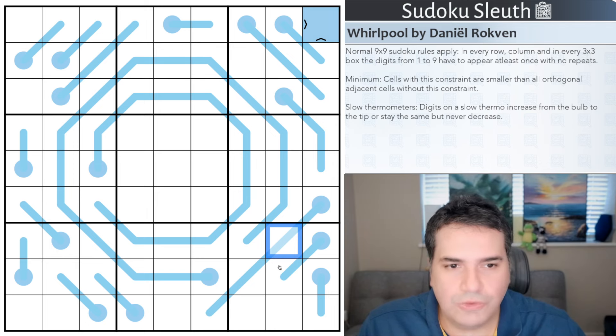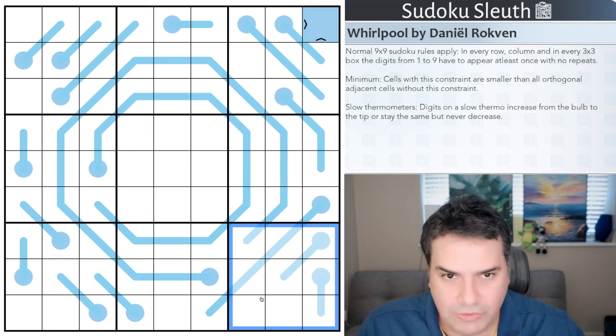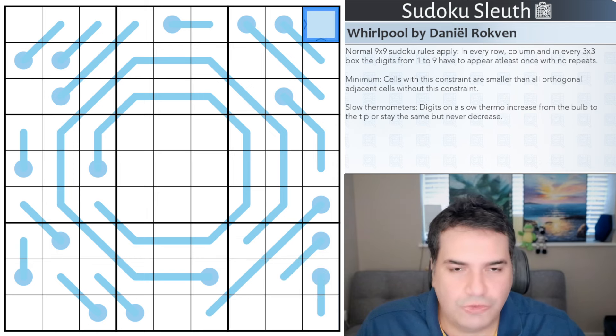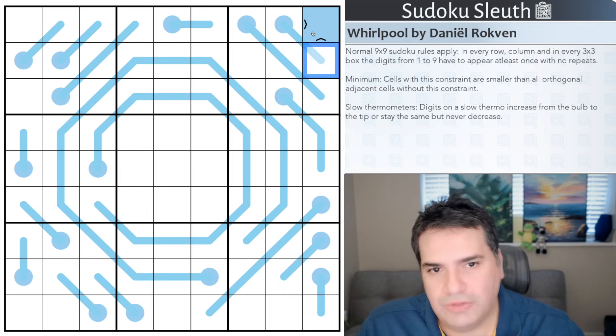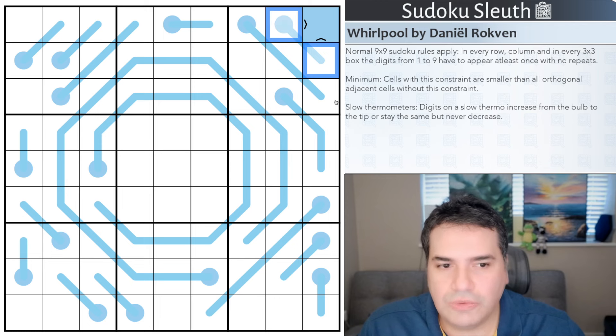Speaking of rules, normal Sudoku rules apply. That means place the digits one to nine once each in every row, in every column, and in every three by three box. Second, we've got the minimum. Cells with this constraint are smaller than all orthogonally adjacent cells without this constraint. So I'm assuming that it refers to this cell up here, which seems to be the only one that's got anything different other than just thermos. And you can see it has that greater than symbol, implying that these two cells that are orthogonally adjacent must be larger than whatever is contained in here.